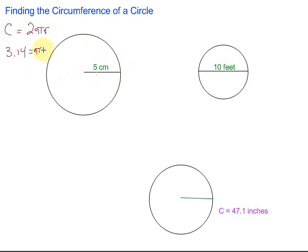So in this circle we're given the radius. Remember the radius is half the distance across the circle. It's from the center to the outside edge. This radius is 5 centimeters. So we're going to take that 5 and put it into our formula.